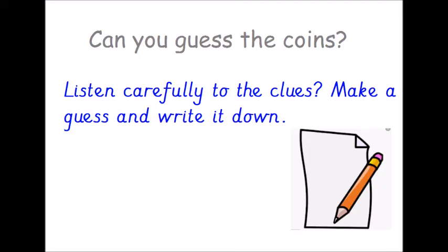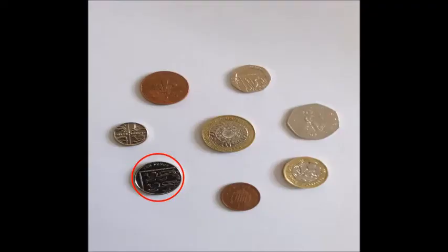This coin is round and silver. It's not the smallest silver coin. What can it be? It was the 10p coin. Did you get it right?